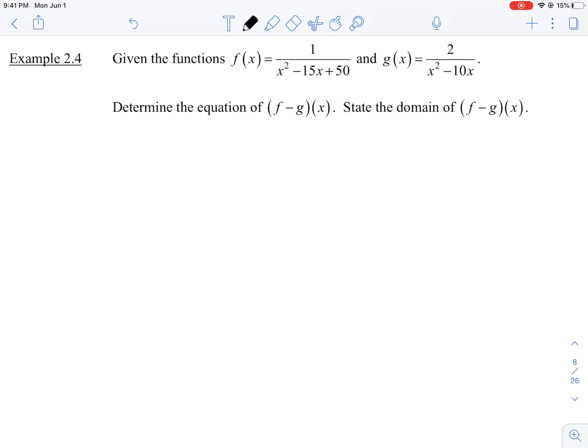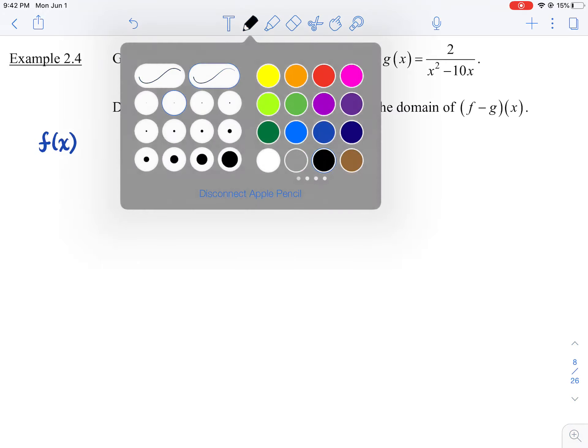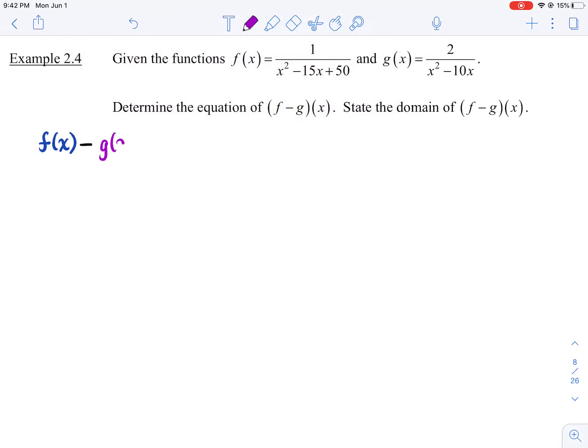All right, so we're going to go f minus g. So we're going to go f at x minus g at x. I'll color code things at the beginning, but then I'll likely get lazy and stop. I'm just being honest here. I'll eventually just stick with one color.